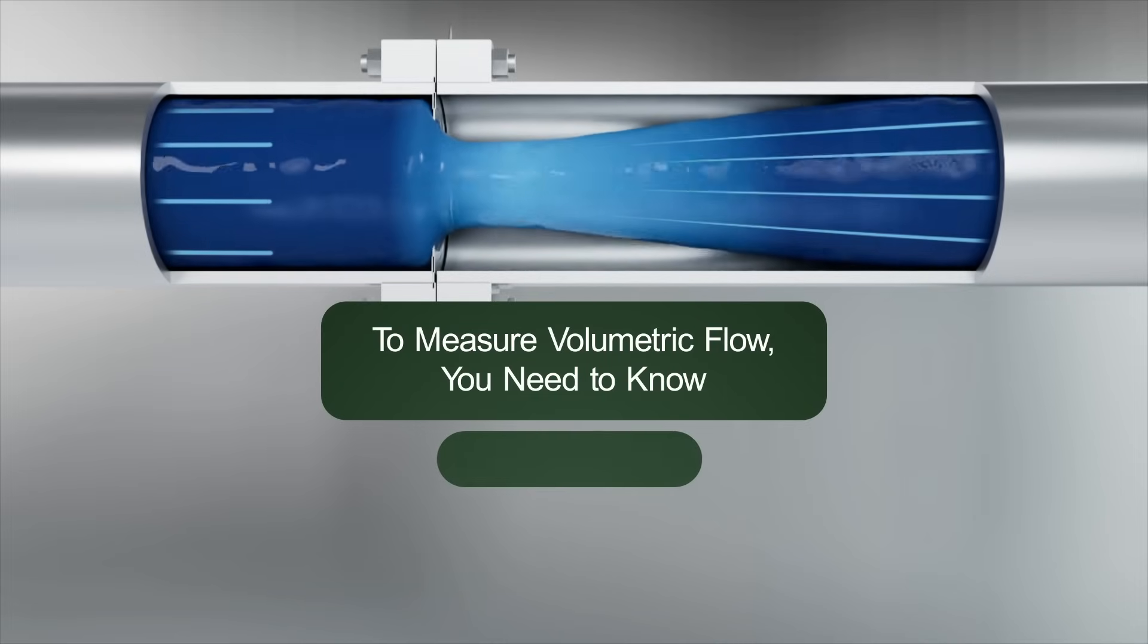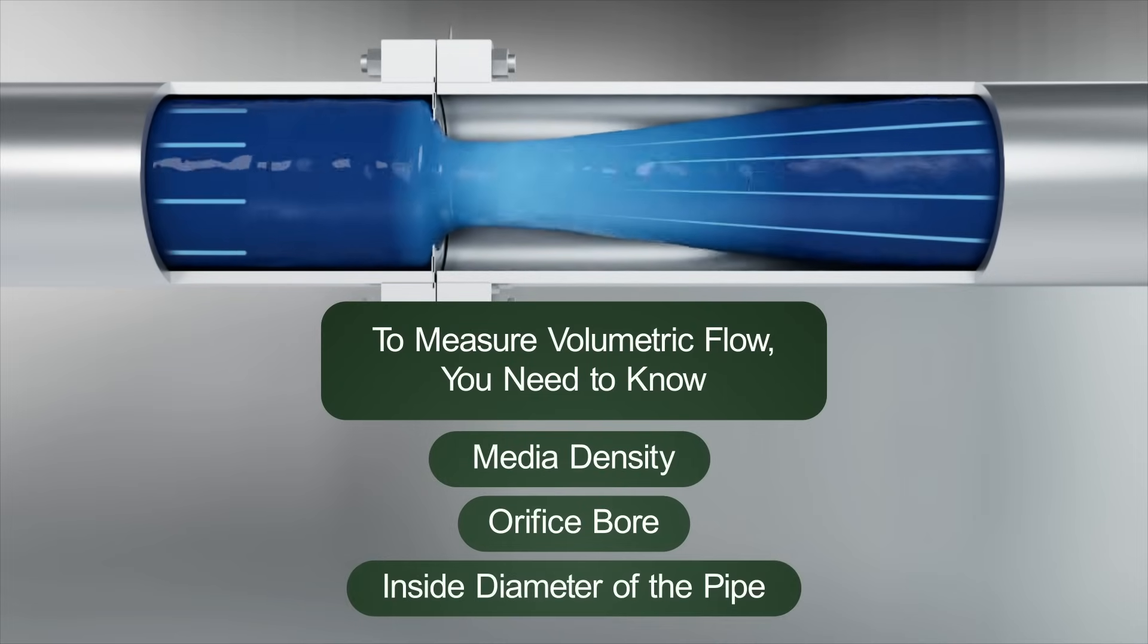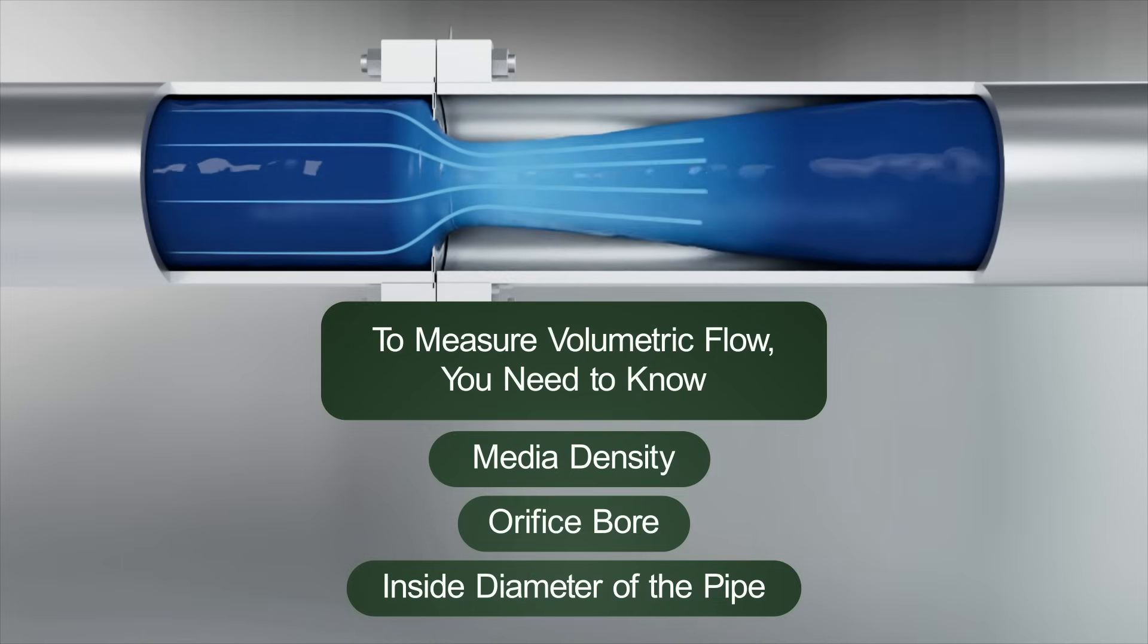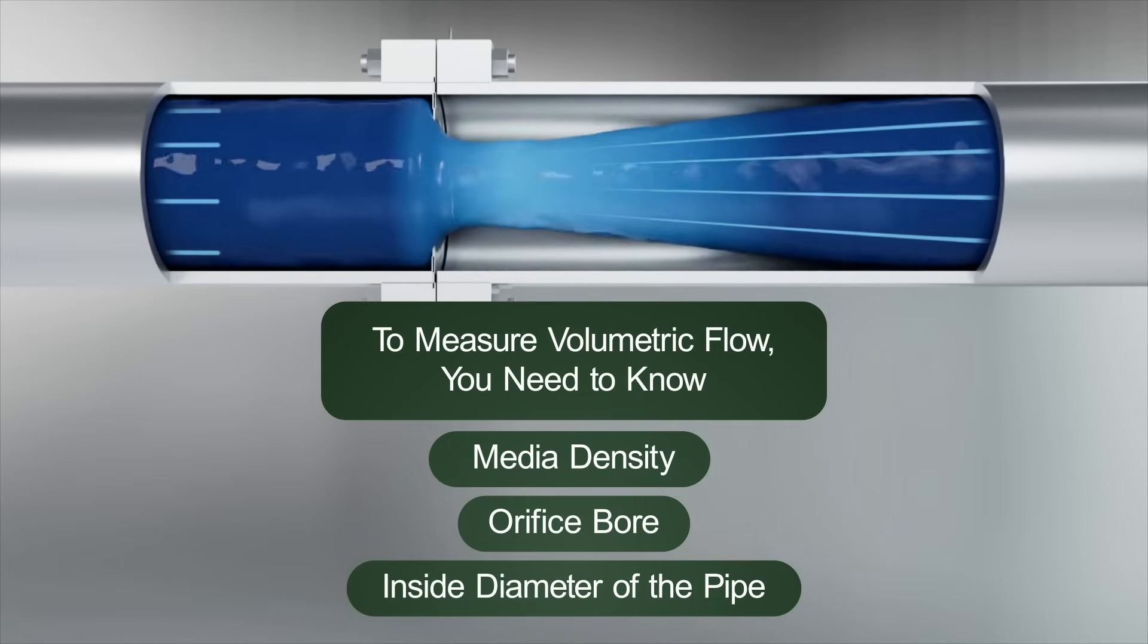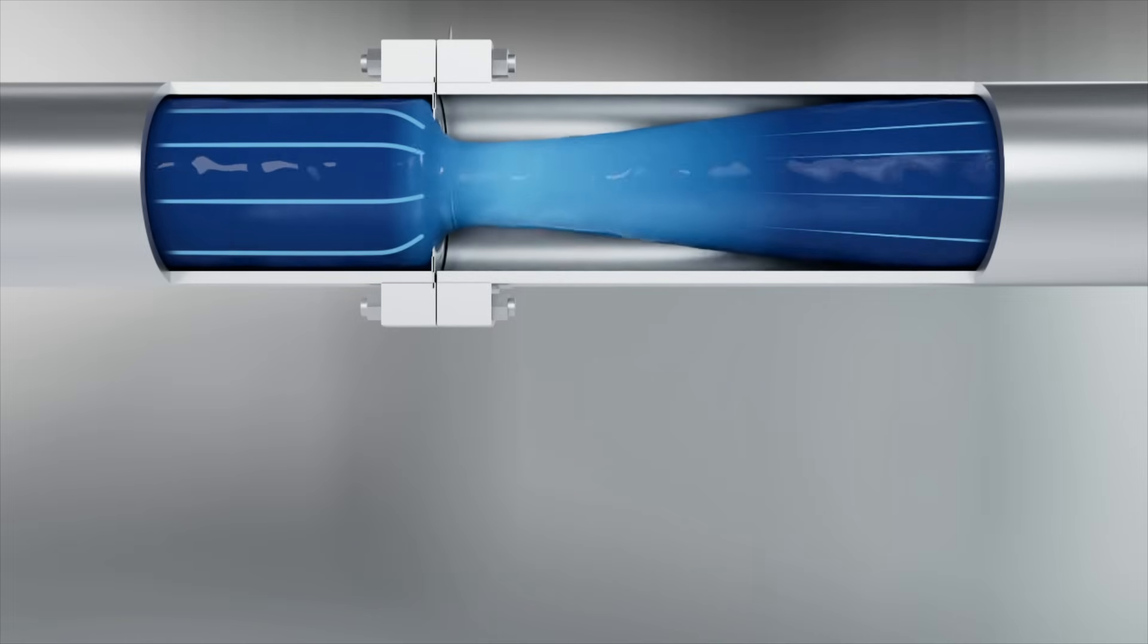If the user knows the density of the media in the process, the orifice bore, and the inside diameter of the pipe, an accurate volumetric flow can be recorded by measuring the differential pressure across an obstruction such as an orifice plate.